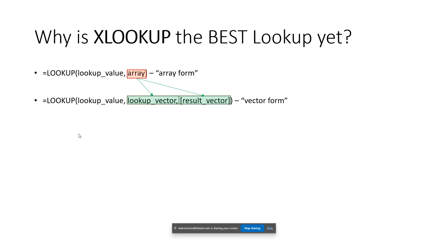But with the LOOKUP function there's still room for improvement, because both the array form and the vector form default to an approximate match. If you want exactly a specific charge number and the CAM for that charge number, you won't get it. It gives you the next value smaller in an alphabetized list — so if you're looking for Tom, it'll give you Tim because alphabetically Tim comes before Tom. That's not ideal when you need exact lookups.